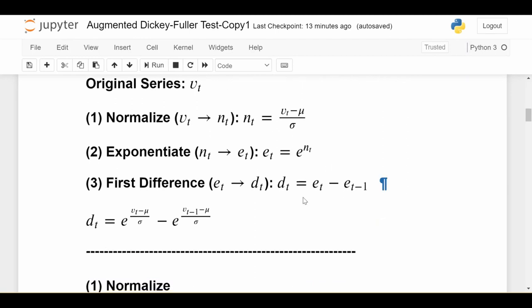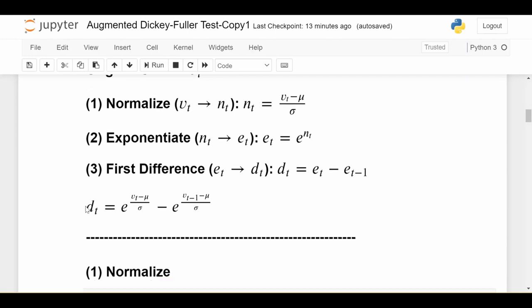If we put all these things together, this is the mathematical formula that takes us from the original series V_t to the transformed series D_t, which we hope is stationary. Let's go ahead and actually do these transformations.